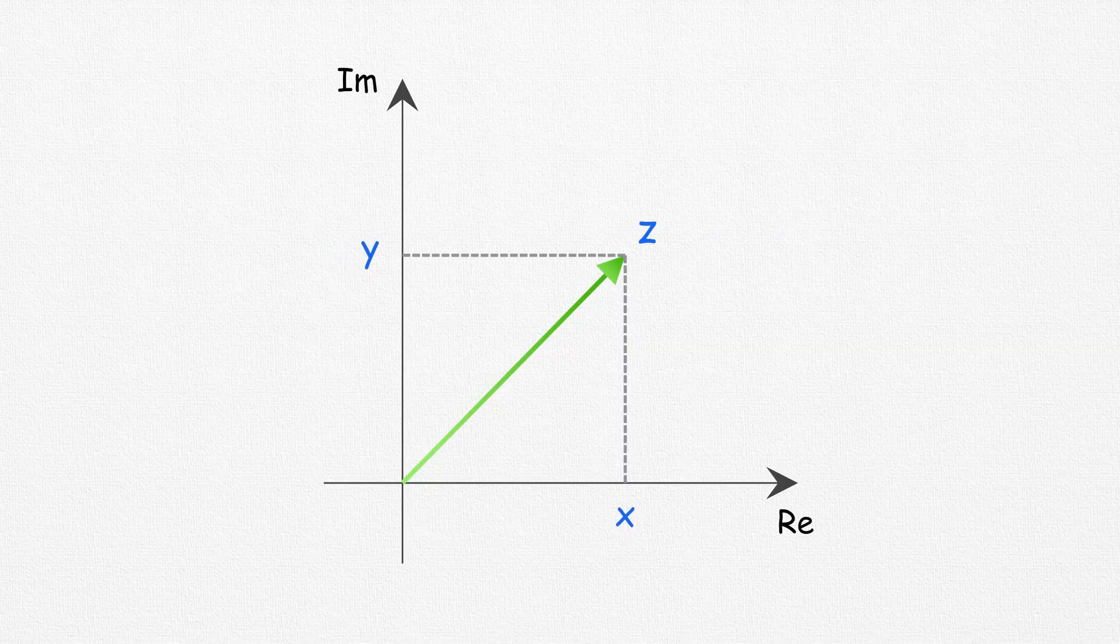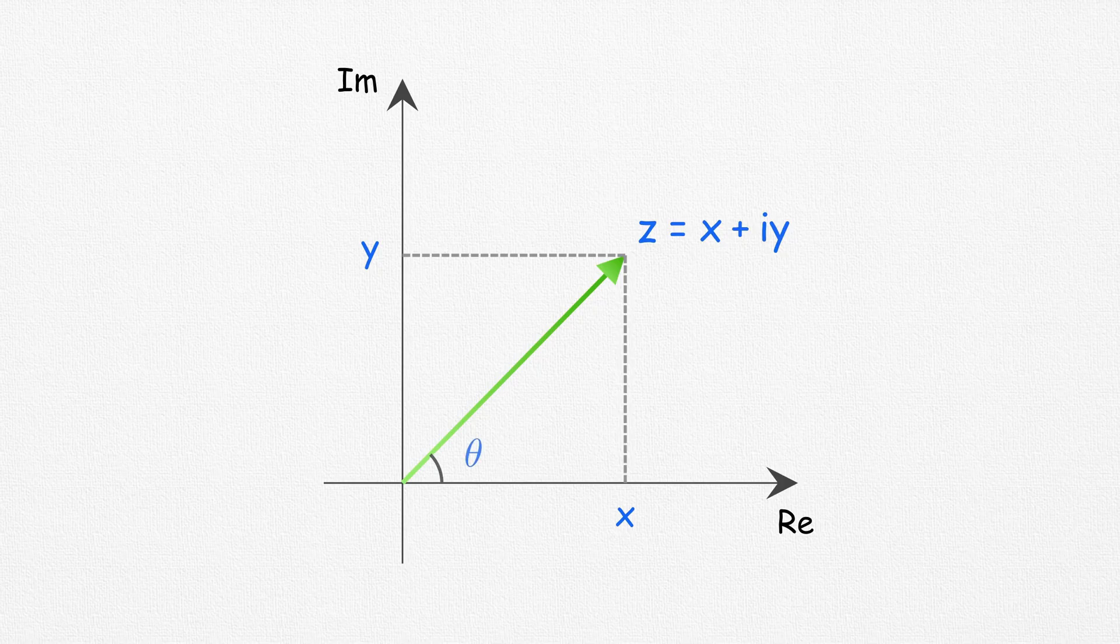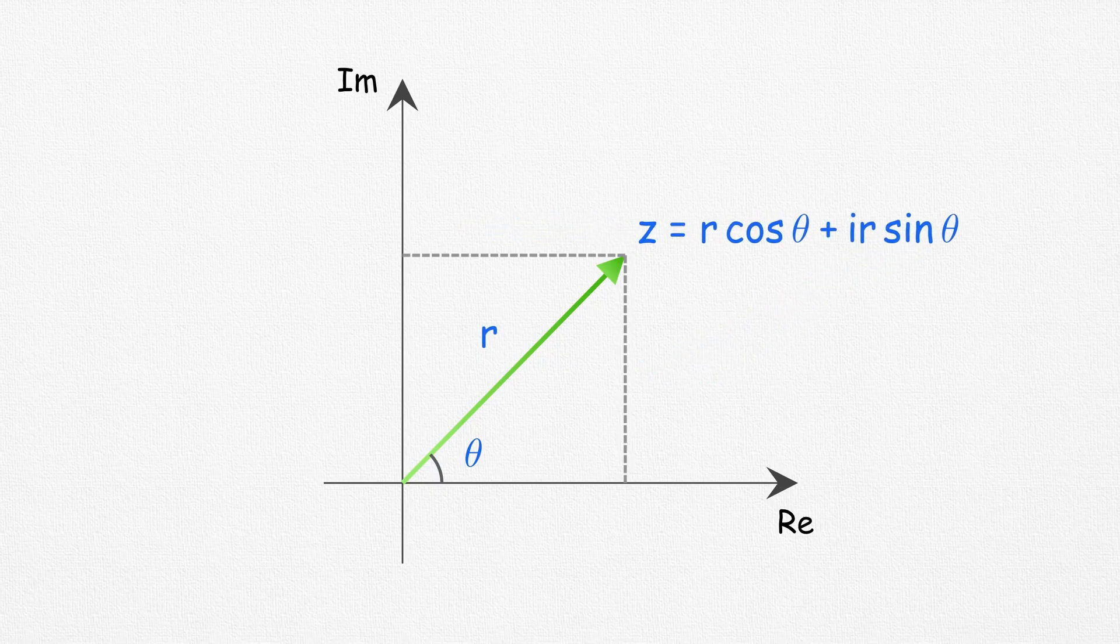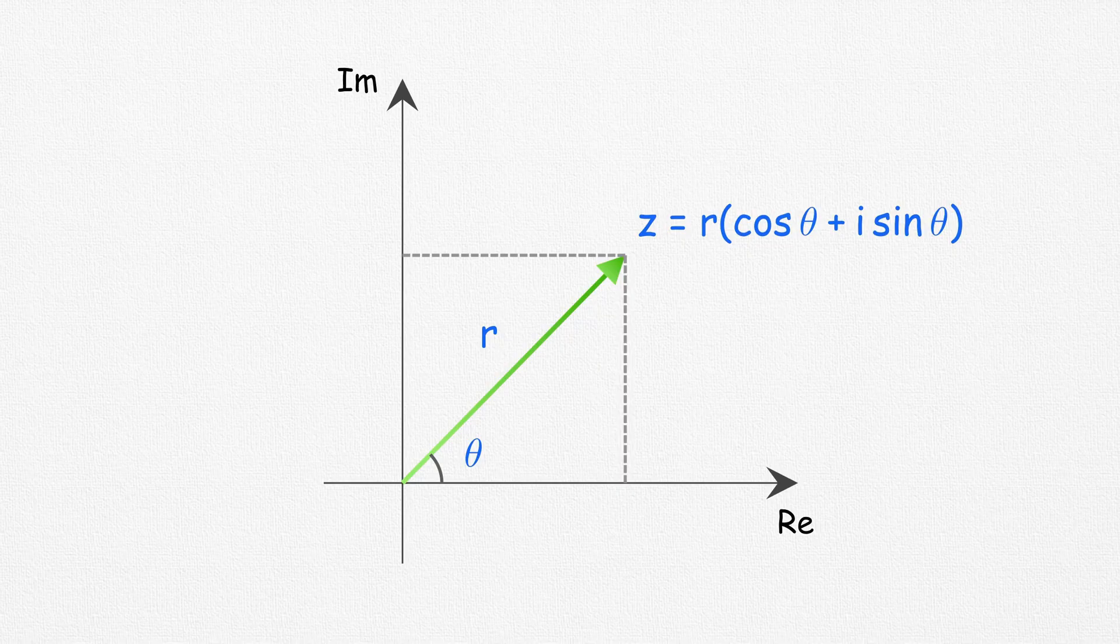A complex number z has a real part x and a purely imaginary part i y. If we take the angle it makes with the real axis as theta and the distance of z from the origin to be r, we can write it in polar form as well. Now using Euler's equation, we can write z equals r times e to the power i theta.